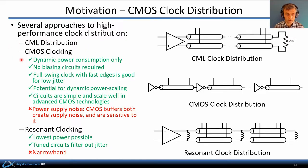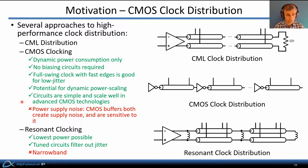We increasingly see the use of CMOS clocking, which offers several advantages over CML. There's dynamic power consumption only — no resistive loads, only capacitive loads are driven, and no biasing circuits are required. CMOS inverters are used as buffers, producing full-swing clocks with very fast rise and fall times, which are good for low-jitter clock distribution. They offer the potential for dynamic power scaling: as clock frequency decreases, power decreases proportionally, and lowering the supply voltage reduces power further. The circuits are simple and scale well in advanced CMOS technologies.